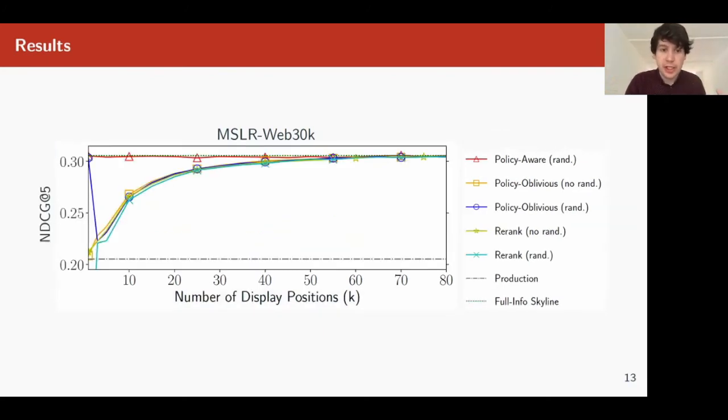Similar graph, now we have NDCG. The higher the better. Production ranker down here. The dotted line up here is the optimal model. And the policy-aware estimator, again, very closely approximates the optimal ranking model, regardless of how many display positions there are. So the degree of item selection bias seems to have no effect on this estimator at all, which is very good because it indicates it's unbiased with respect to this bias.